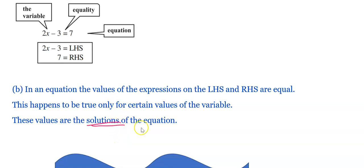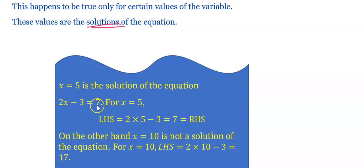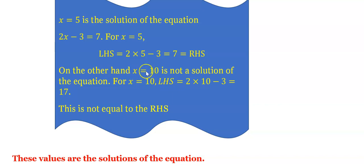These values are the solutions of the equation. For example, x equals 5 is the solution of 2x minus 3 equals 7. For x equals 5, LHS equals 2 times 5 minus 3 equals 10 minus 3 equals 7, which equals the RHS. On the other hand, if we substitute x equals 10: LHS equals 2 times 10 minus 3 equals 20 minus 3 equals 17, which is not equal to the RHS. Therefore, x equals 10 is not a solution, and x equals 5 is the solution.